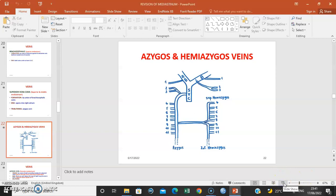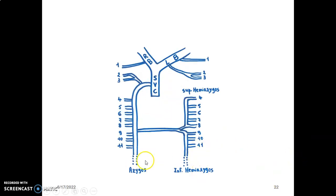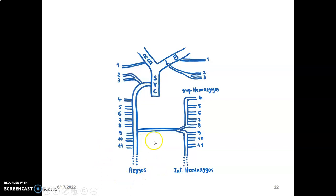The azygos system is formed by the right ascending lumbar and the right subcostal, while the inferior hemiazygos is formed by the left ascending lumbar and the left subcostal. From the image, you can appreciate that the azygos is formed by the right ascending lumbar and the subcostal vein. It has tributaries from the fourth to eleventh posterior intercostal veins, and the second to third intercostal veins join it before it empties into the superior vena cava.